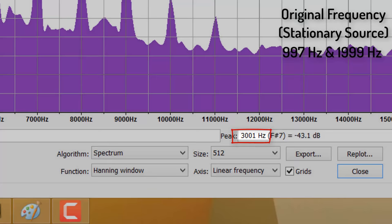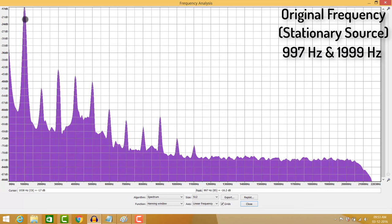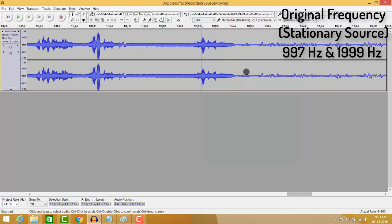And there are other harmonics available, but let's not look at those. Let's just concentrate on this primary one, that's 997, that's the fundamental frequency, and 1999. So, we're going to keep track of this.